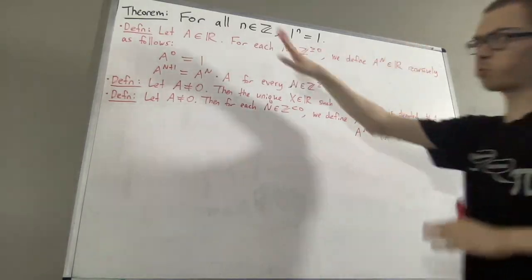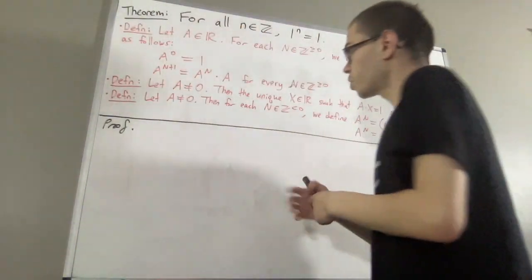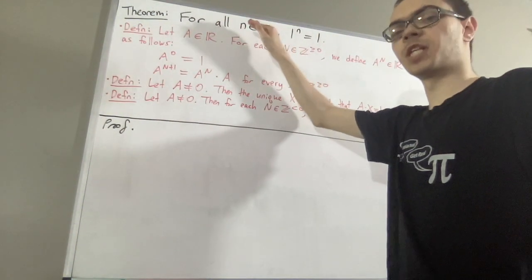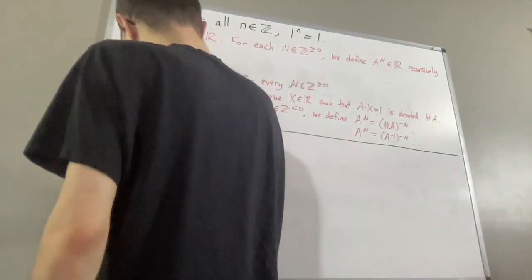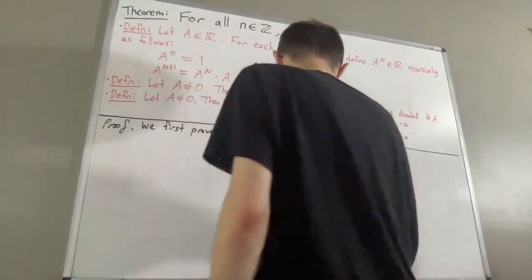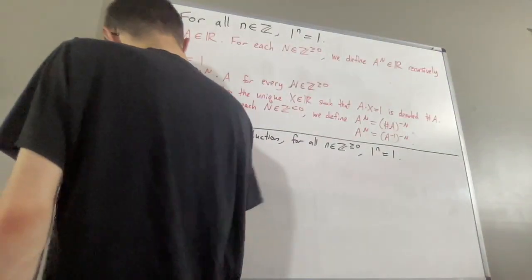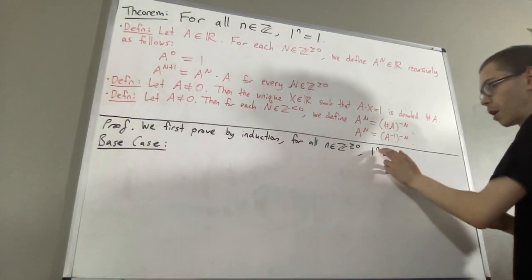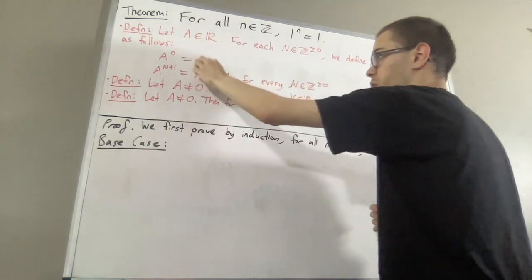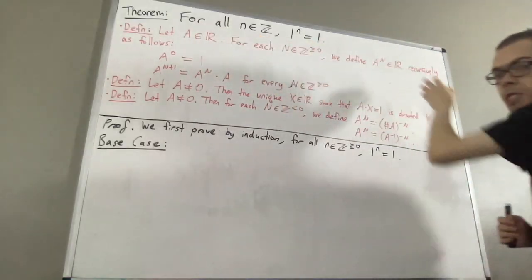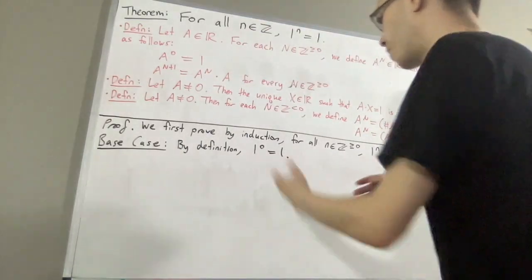Now, let's get into proving the theorem. To start out, we are first going to prove for every non-negative integer n, 1 to the power of n is equal to 1, and we're going to prove that by induction. Let's start with the base case. In the base case, we're trying to establish 1 to the power of 0 is equal to 1, but that's just true by definition — any real number to the power of 0 is equal to 1, according to our definition of non-negative integer exponents. So, that's the base case.